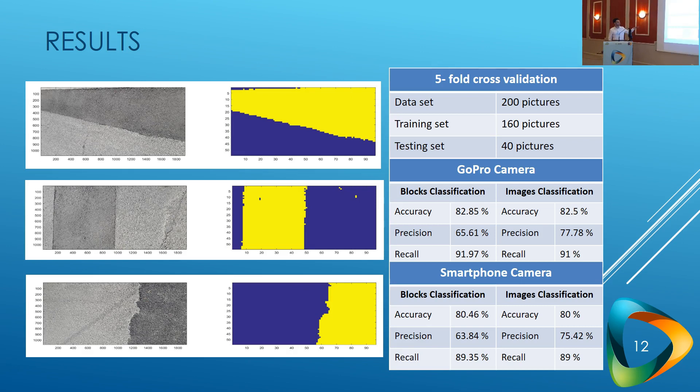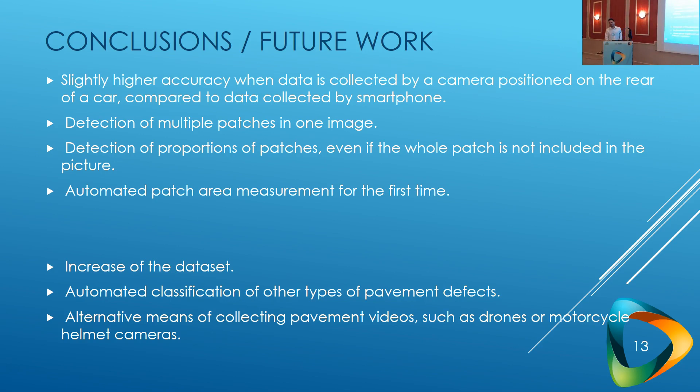On the left you can see how the results are presented by our code. Yellow color indicates the area of the patch and blue color indicates the area of healthy pavement. After comparing our results, positioning a camera outside of the car is better — we have slightly better accuracy, possibly because when the camera is inside the car it is affected by the cleanliness of the window. Our algorithm has strong advantages such as detection of multiple patches in a single image and detection of partial patches when the whole patch is not included in the image.